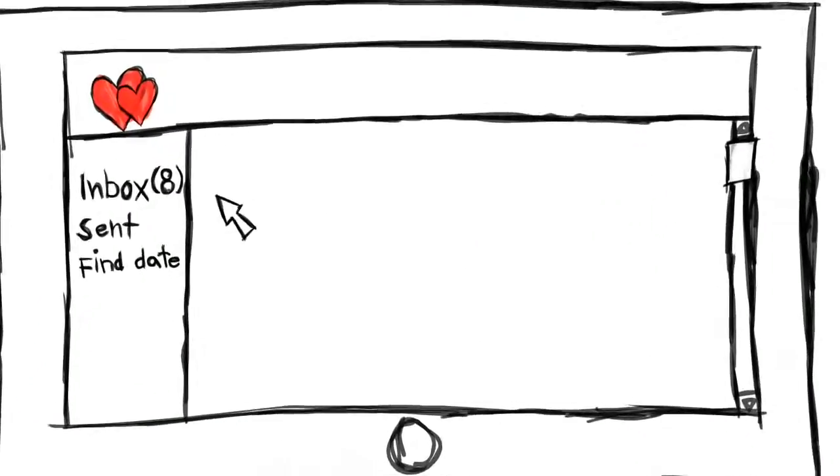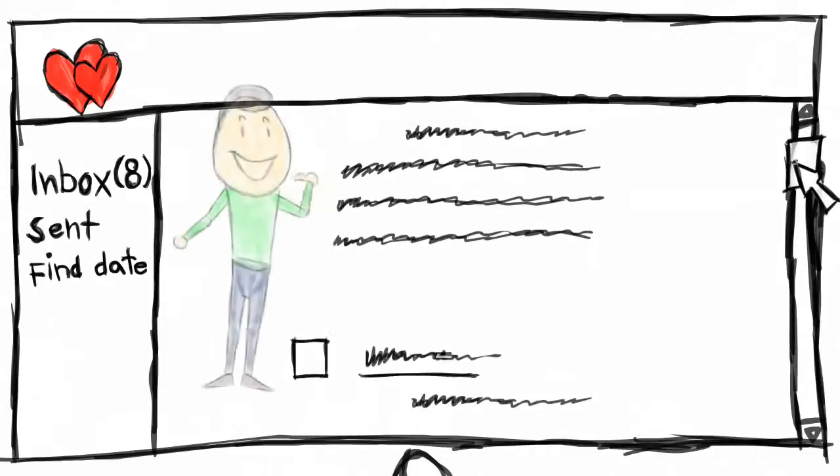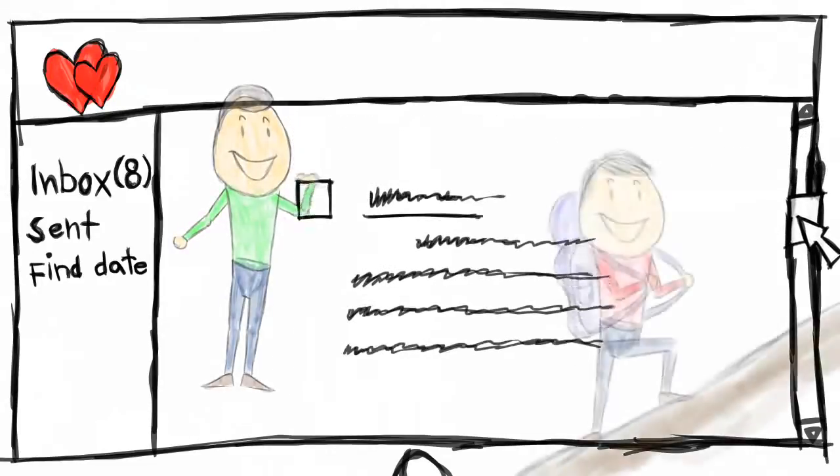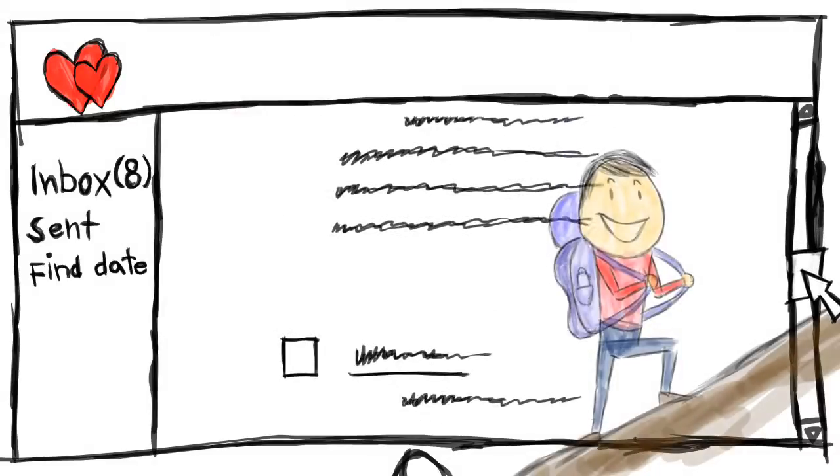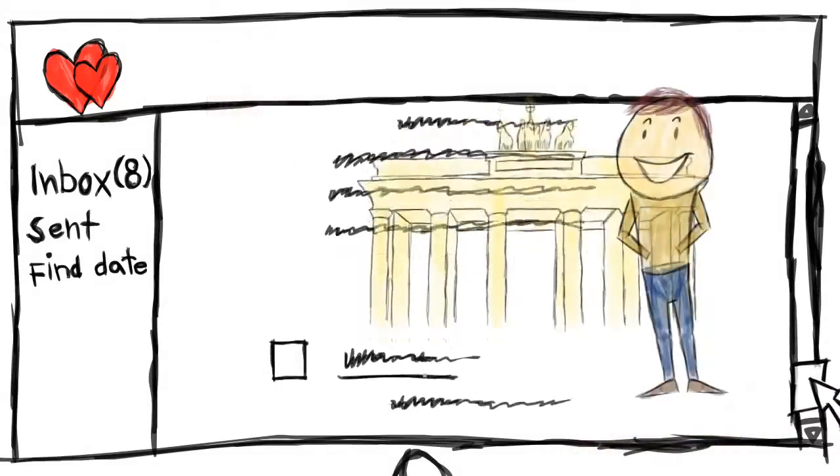She logged into her account and showed me her inbox. There were eight new messages, each one well written, saying what the man liked about her profile, how they have a mutual interest in hiking, or that he also speaks German, and asking her if she's also been to Berlin or if she's hiked in New Zealand.